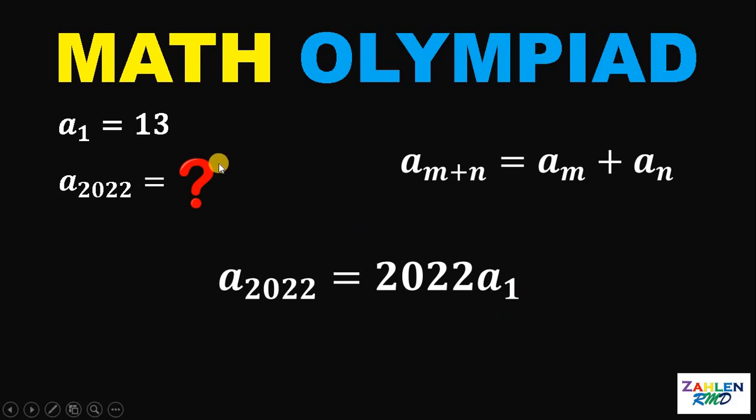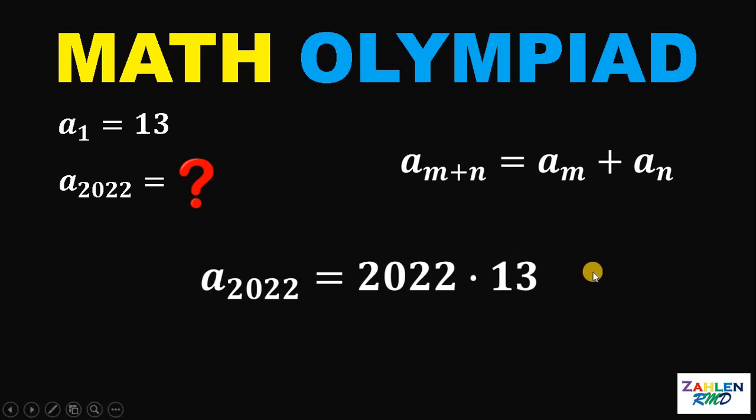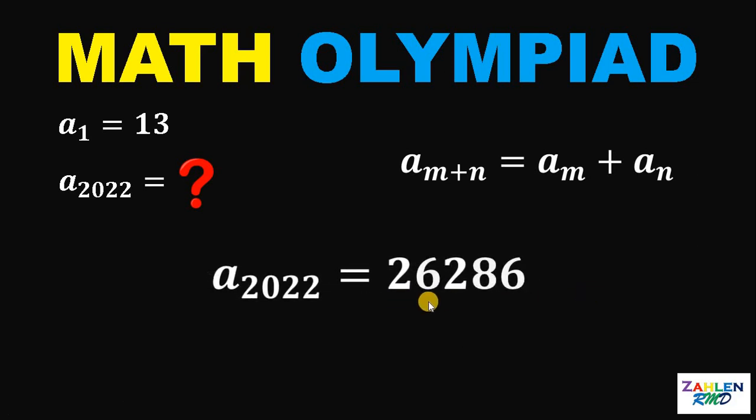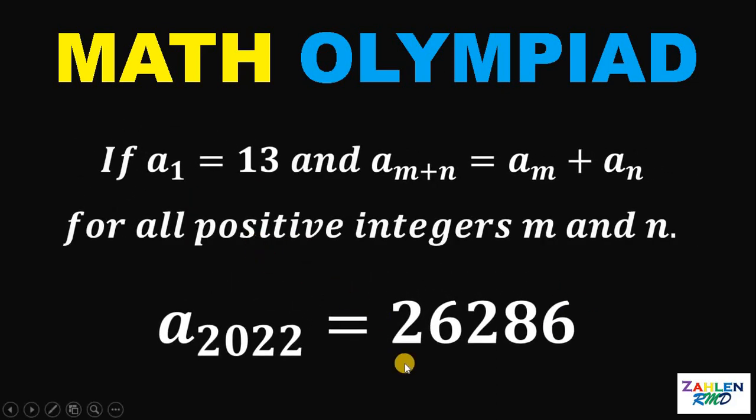We know that a sub 1 is 13. Therefore, the value of a sub 2022 is just 2022 times 13. Or simply, 26,286. Therefore, our answer to this question is 26,286. And as always, we are done.